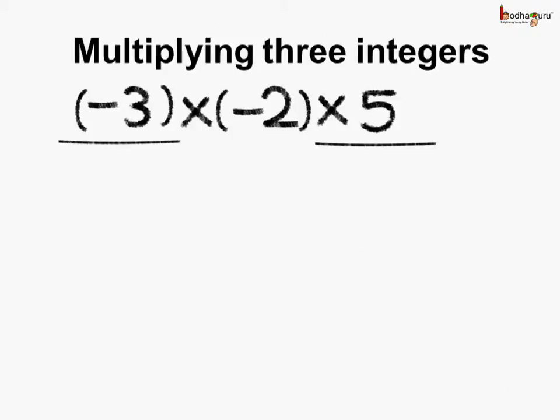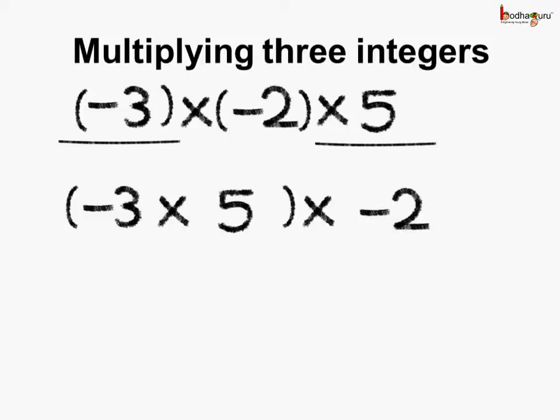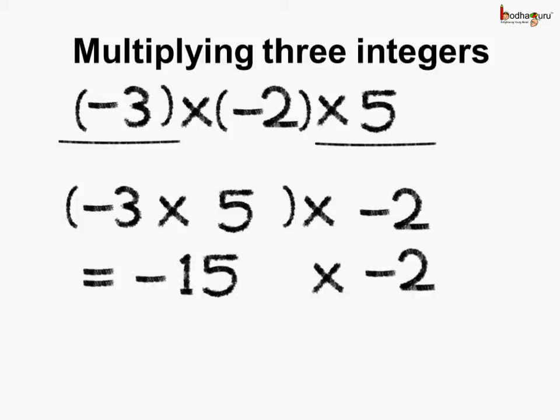Now let's take another group — multiply 3 and 5 first. So minus 3 multiplied by 5, and then we multiply by minus 2. Minus 3 multiplied by 5: here we are multiplying a positive integer by a negative integer, so the answer would be a negative integer. The product is 3 multiplied by 5 which is 15, putting the negative sign gives minus 15, multiplied by minus 2.